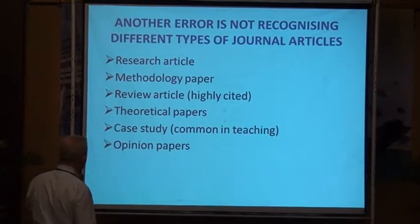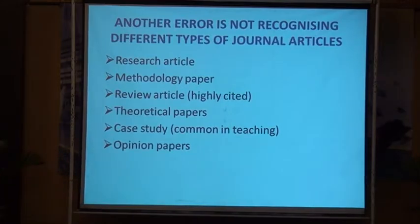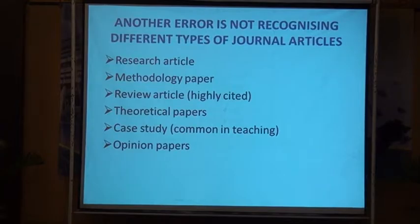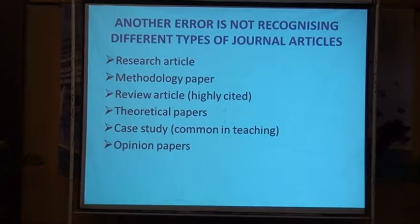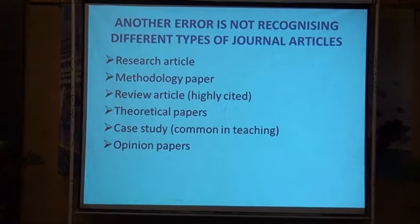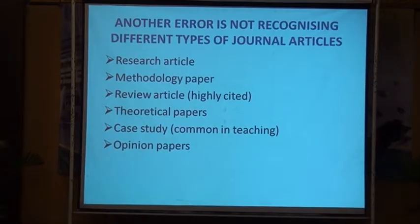Another error is not recognising different types of journal articles. There are research articles, methodology papers, review articles — systematic review articles from our doctoral students are really highly cited — theoretical papers, case studies, and opinion papers. Different journals will be interested in different sorts of papers. It's no good submitting a theoretical paper to a purely empirically based journal, and similarly no good sending a case study to a journal interested in theory and methodology unless you make the connection.